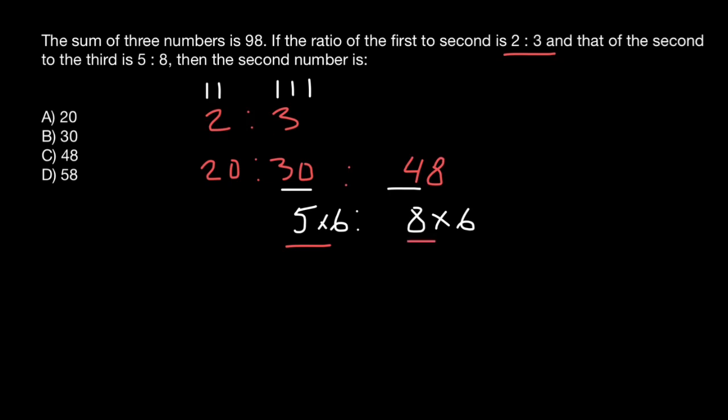Again, here is the ratio between numbers two and three: 5 to 8. Between 30 and 48, the ratio is going to be 5 to 8. Because we can reduce these numbers, we can divide them by 6, and we get 5 and 8.